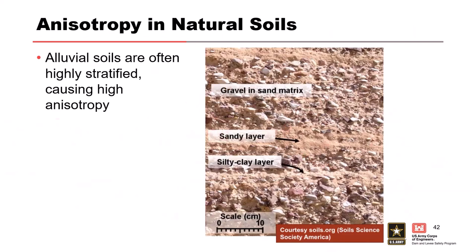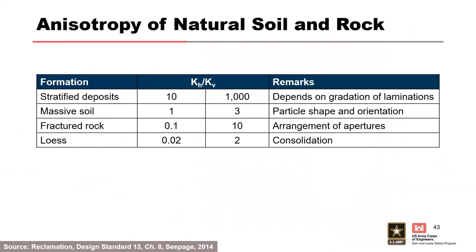Reclamation looked at different materials at their dam sites and natural soils at various locations, coming up with ranges for different formations. For stratified deposits, your anisotropy can be anywhere between 10 and 1,000 — very dependent on the layering. At best, this table is a guide; at worst, not particularly useful. But it gives you a range to work with so you know your stratified deposit probably doesn't have an anisotropy of 1.